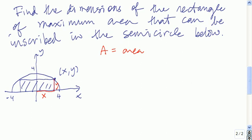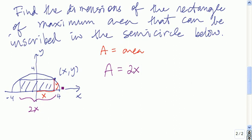The next step is to write down the primary equation, which is the equation for the quantity to be maximized or minimized. In this case, we're maximizing area — the area of this rectangle. So the primary equation is a equals the length of the rectangle, which is x plus x, or 2x, times the height of the rectangle, which is y.